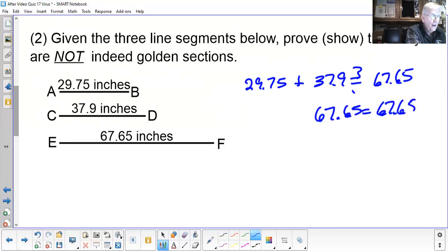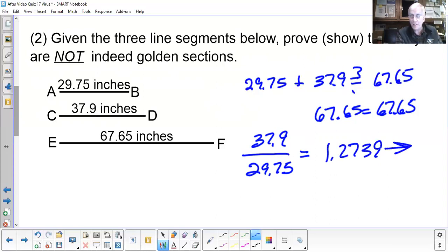So it appears so far these fit the golden ratio. I mean the property of golden sections. So I got ahead of myself. I want to see if the segments consecutively divided by each other also give me phi. If I take 37.9, the middle length one, and divide it by the short guy, 29.75, do I get phi? Let's see, 37.9 divided by 29.75, I got 1.2739 and it keeps on going. Hey, what's that telling me? These are not golden sections. Even though the two shorter lengths add up to the longer one, they are not satisfying the properties of being golden sections. Therefore, we can assume they are not.